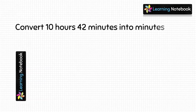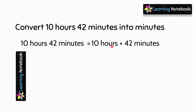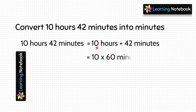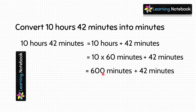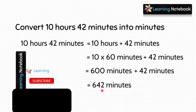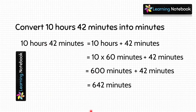Let's do one more: convert 10 hours 42 minutes into minutes. Here, 10 hours 42 minutes means 10 hours plus 42 minutes. We convert the 10 hours into minutes and add the 42 minutes to it. We know 1 hour equals 60 minutes, so 10 hours equals 10 into 60 minutes, plus 42 minutes. 10 into 60 equals 600, and 600 plus 42 equals 642. So 10 hours 42 minutes equals 642 minutes.